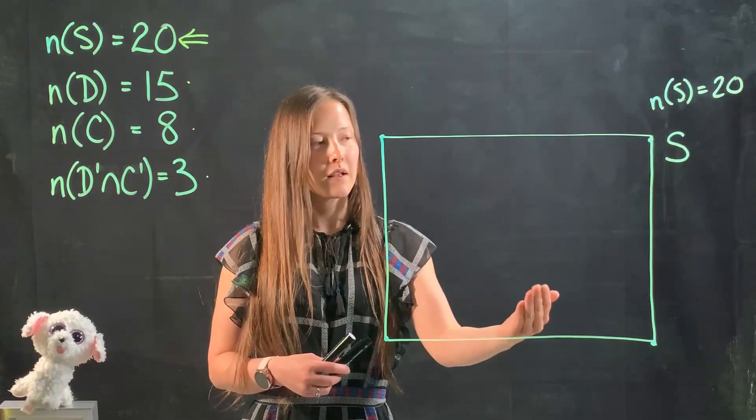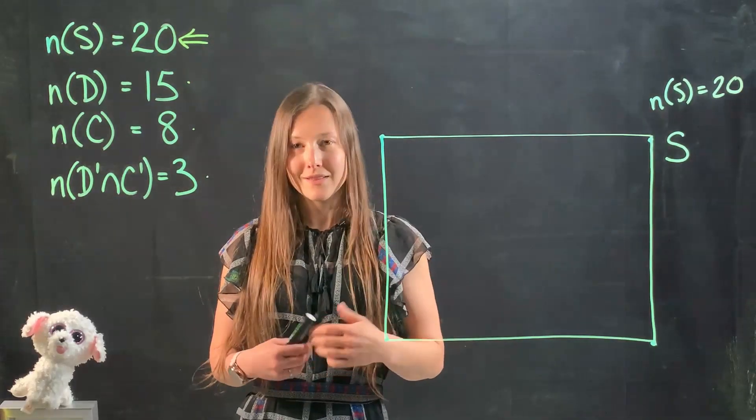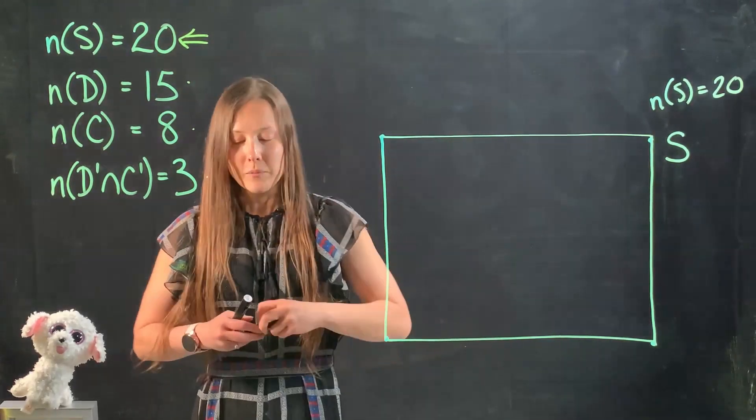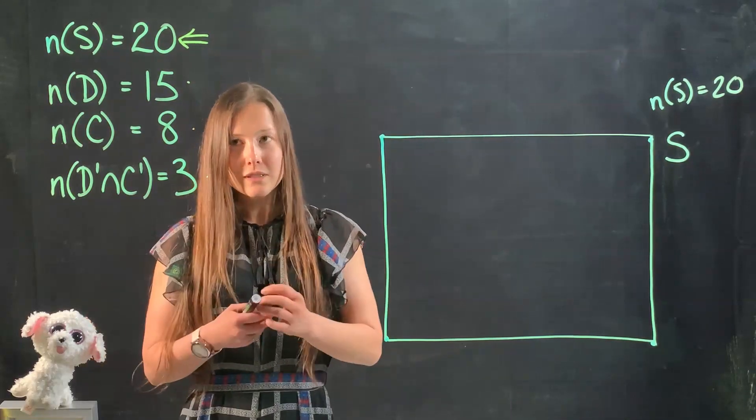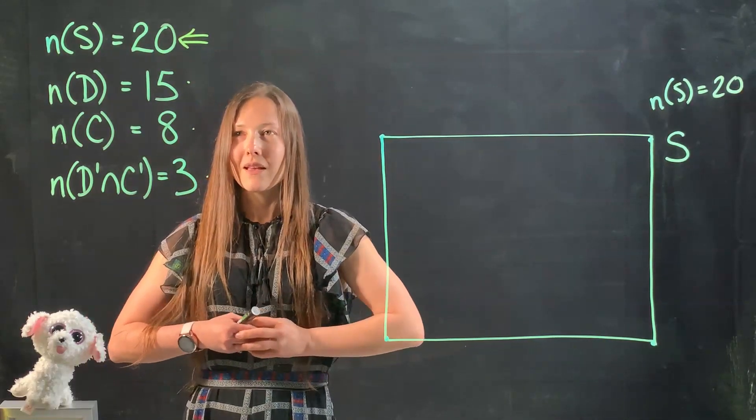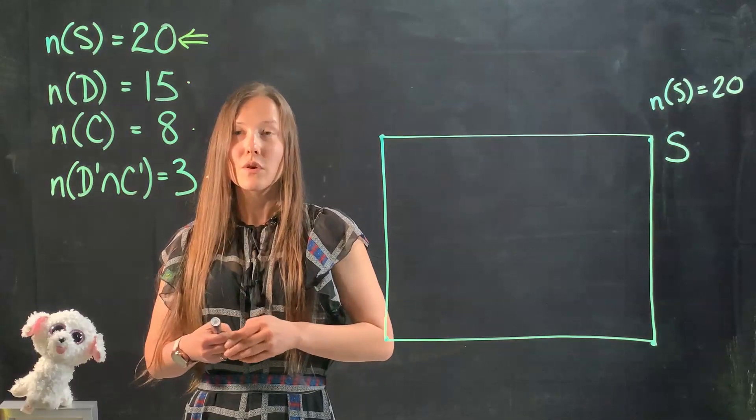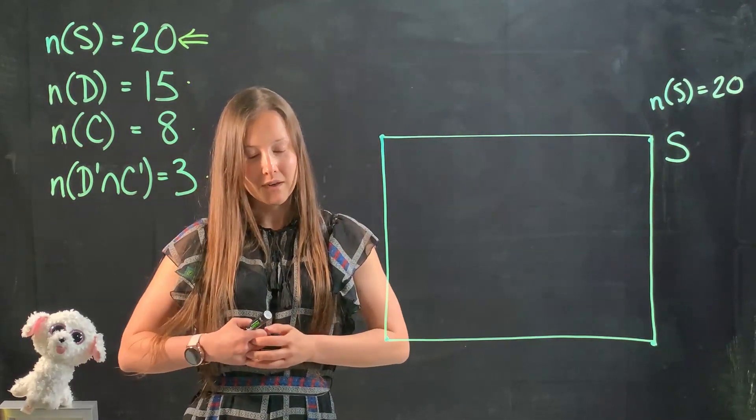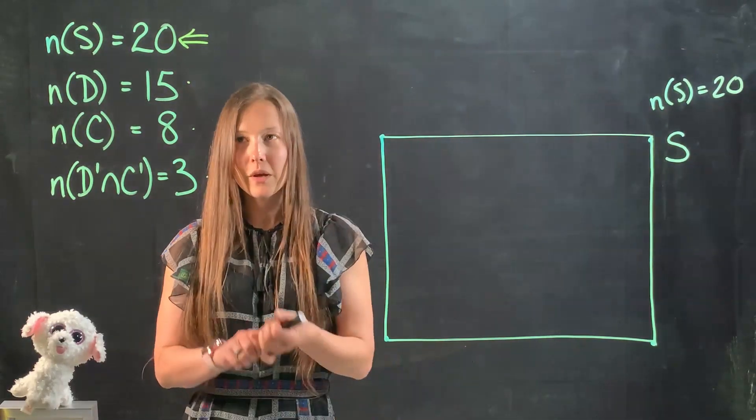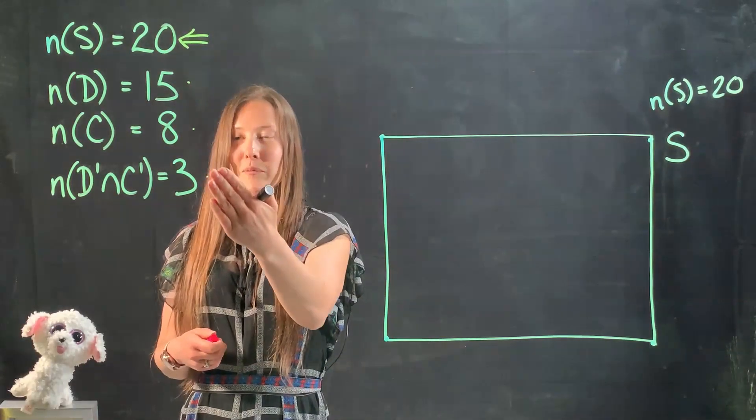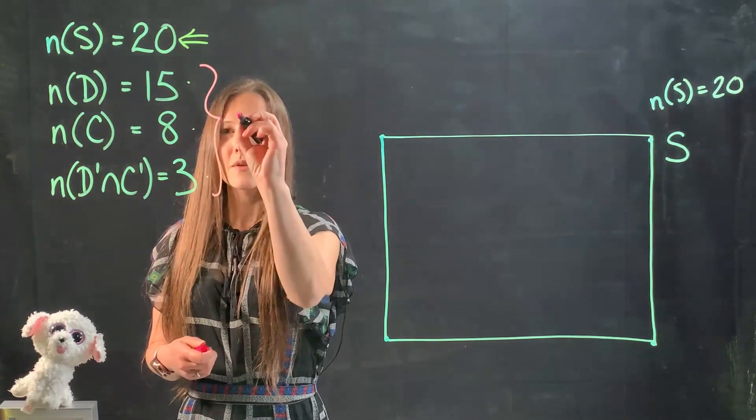Again, this is not technically part of the Venn diagram, but it's just a good reminder for us to check in the end that the total elements within this Venn diagram is going to be 20. Before I actually create the circles, what I'm going to find out is do these numbers total to 20 like I'm expecting. So let's go ahead and add them up: we have 15 plus 8 plus 3.